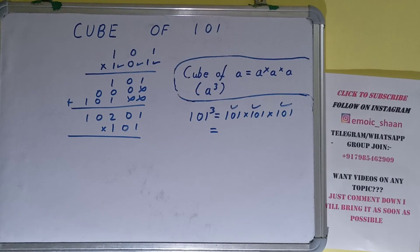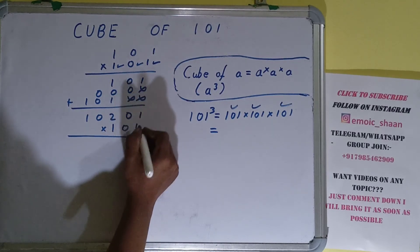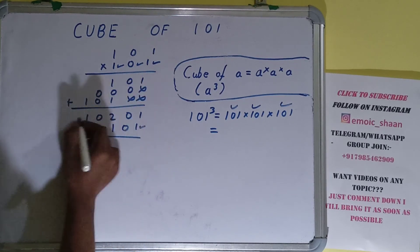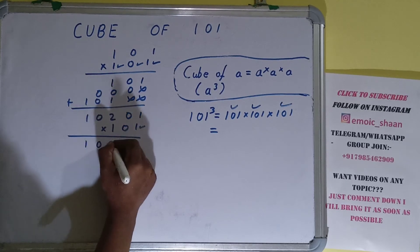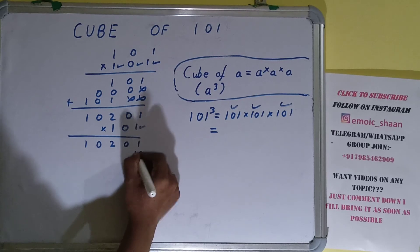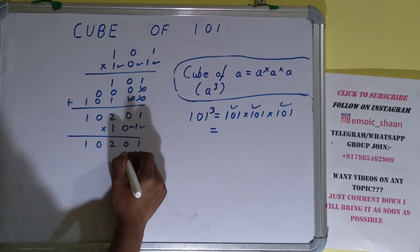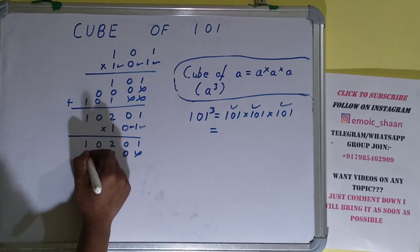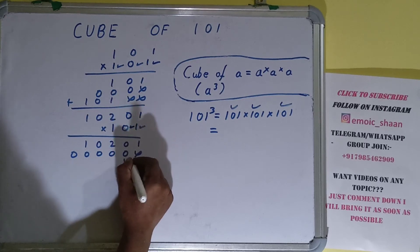Now because this is one we can just copy the upper row 1-0-2-0-1, because one into anything is that number. Now for this zero we can just write five zeros.